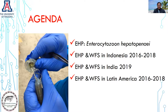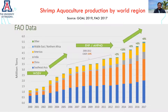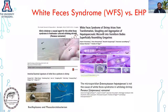In the agenda, I'm going to talk briefly about four different aspects about EHP and then in three different scenarios, I'm going to talk about EHP and White Feces Syndrome in Indonesia, India, and the first report in Latin America. This figure briefly shows how enteric pathogens such as EHP and HPND have caused a decrease in shrimp production during the last 10 years, which is why everybody is working on this pathogen, especially EHP.